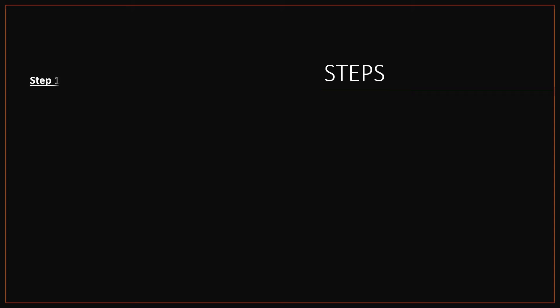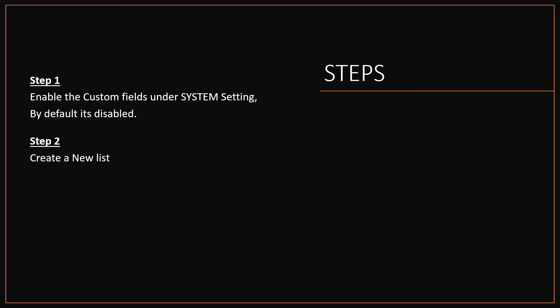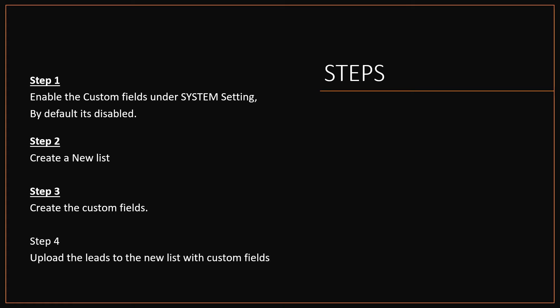Steps to enable and create custom fields. Step 1: Enable the custom list fields option under Admin > System Settings — by default it's disabled. Step 2: Create a new list without any data uploaded. Step 3: Create new custom fields in the list. Step 4: Upload leads to the new list to start dialing.